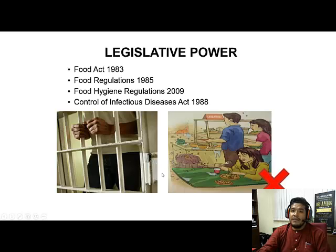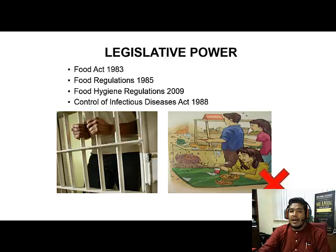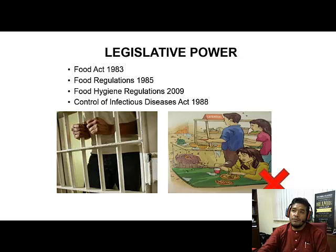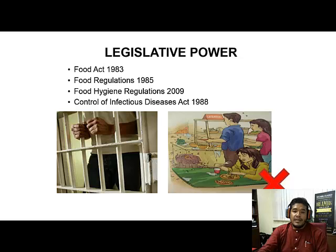Remember that food handlers have been governed with legislative power, just like the rest of the industry, which means we are all governed by Food Act 1983, Food Regulations 1985, Food Hygiene Regulation 2009, and Control of Infectious Diseases Act 1988. For example, the Food Act covers definitions of certain foods, offenses, things you should follow, and restrictions in terms of ingredients. You can always get a copy at the nearest bookstore or google it.